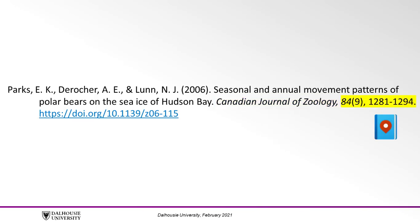The next elements give the specific location of the article in the journal. The volume number comes first and it's italicized, like the journal title. The issue number comes next, is not italicized, and appears in parentheses. Sometimes no issue number is present and the item is identified only by volume number. Next comes a comma and the range of pages where the article appears.